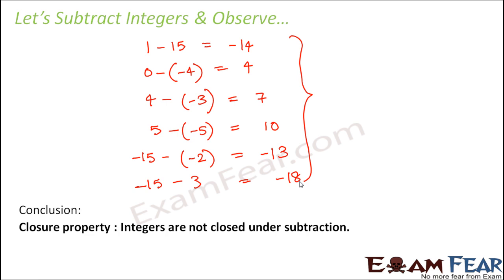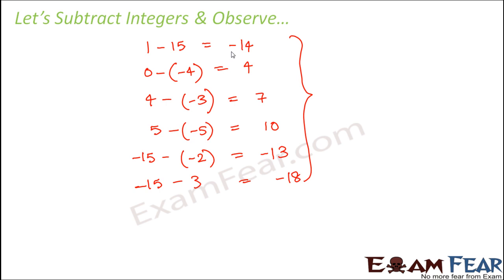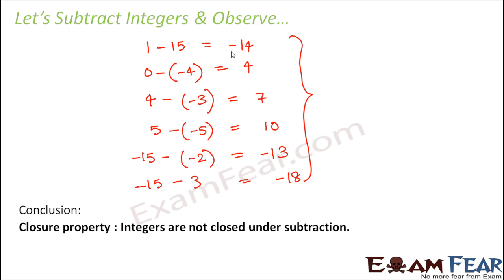Every time we subtract two integers, we get another integer. So can we say that integers are closed under subtraction? Yes — integers are also closed under subtraction. This is different from whole numbers: when you learned about this property for whole numbers, whole numbers were not closed under subtraction. But integers are closed under subtraction. So for any two integers a and b, a minus b will always be an integer.